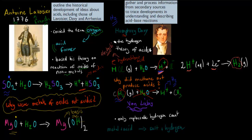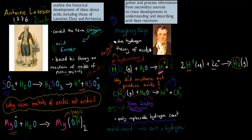So Davy's theory was partially incorrect. Then a German scientist, von Liebig, came along. He still talked about hydrogen being important, but he said that only replaceable hydrogen is what we should be looking at. The hydrogen in hydrochloric acid can actually be removed from the chlorine, which is why it makes things acidic, whereas the hydrogen within methane is not replaceable — it's stuck to the molecule — so methane wouldn't make things acidic.